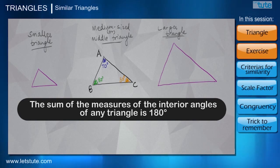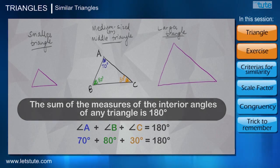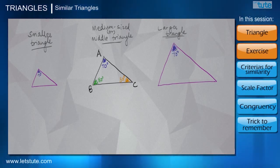Because we know that the total angle measure of the three angles in a triangle is always 180 degrees, so 70 plus 80 plus 30 will give us 180.